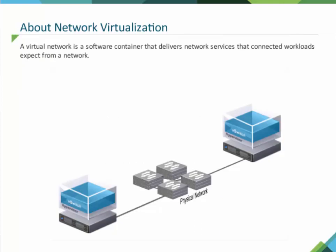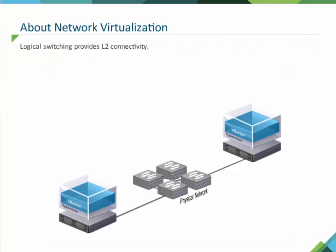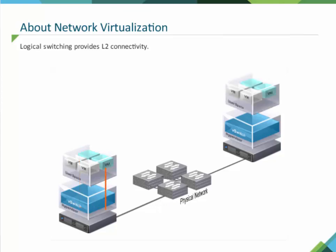A virtual network is a software container that delivers network services that connected workloads expect from a network. Logical switching provides L2 connectivity. Traffic may be between two virtual machines on the same hypervisor host, or may be between two virtual machines on two different sides of the data center across multiple L3 subnets and availability zones.